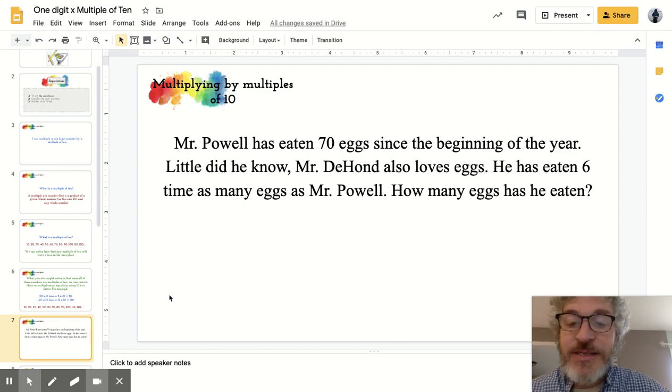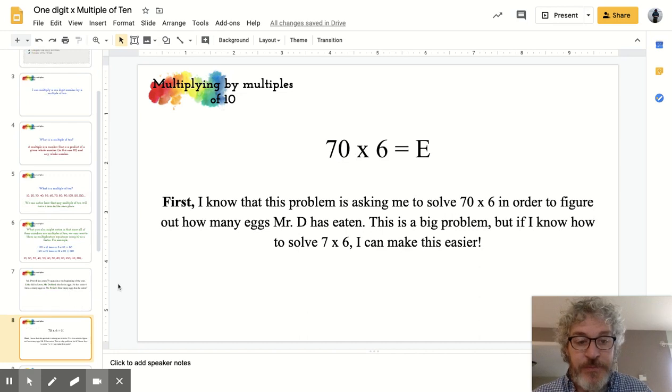So here is an equation we're going to look at. Mr. DeHaan has eaten 70 eggs since the beginning of the year. Whoops, that's a mistake. Mr. Powell has eaten 70 eggs since the beginning of the year. Little did I know that Mr. DeHaan also loves eggs, and Mr. DeHaan has eaten 6 times as many eggs as I have. How many eggs has Mr. DeHaan eaten?